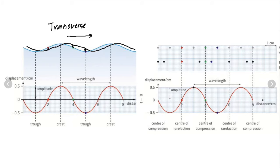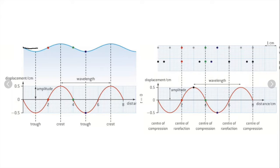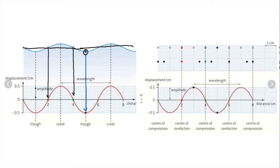I moved the wave just a little bit over to the right. You can see that the blue particle is going to move up, the green particle is going to move up, and the red particle is going to move down. It's important to notice that this is the equilibrium going through the middle. Right now the red point is at equilibrium, at zero. The green point is at equilibrium, at zero. The blue point is below the line, so it has a negative displacement — it's down below.